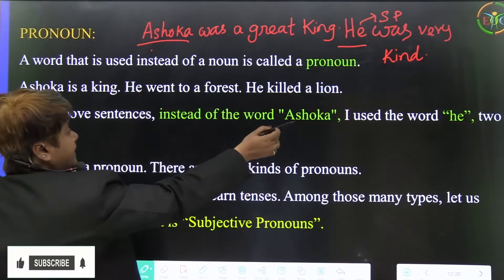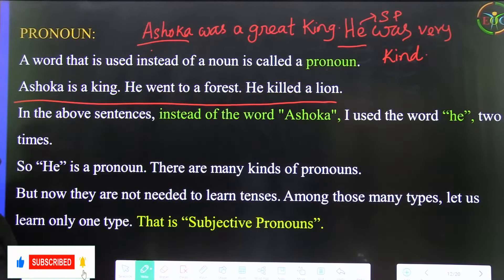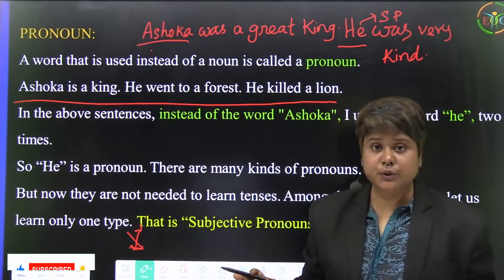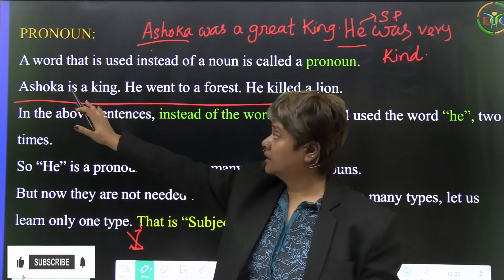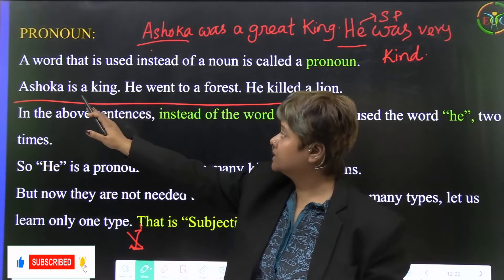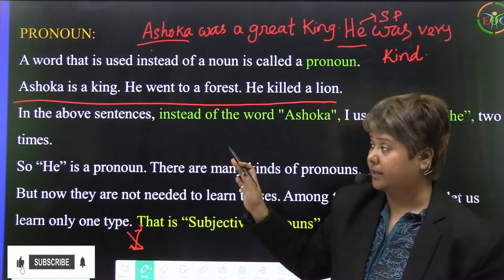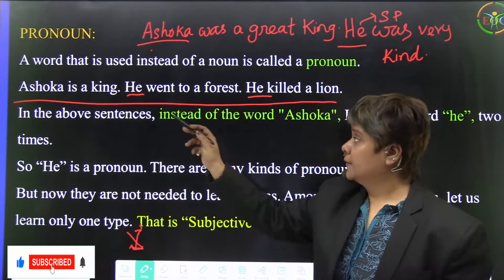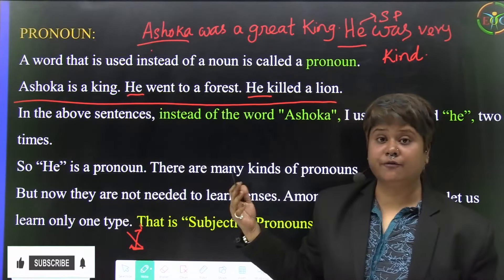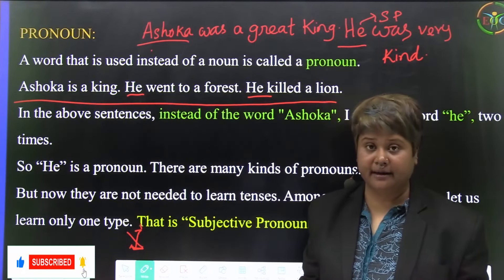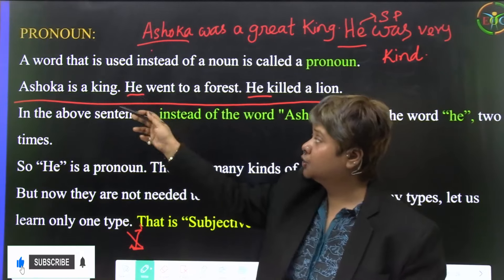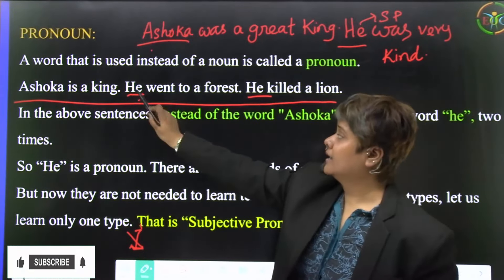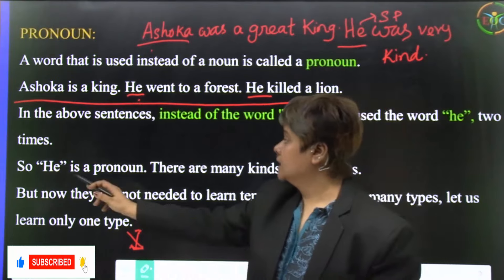For example: 'Ashoka is a king, Ashoka went to a forest, Ashoka killed a lion' — this doesn't sound good. So instead we say: 'Ashoka is a king, he went to a forest, he killed a lion.' Here, 'he' is a pronoun used in place of Ashoka.